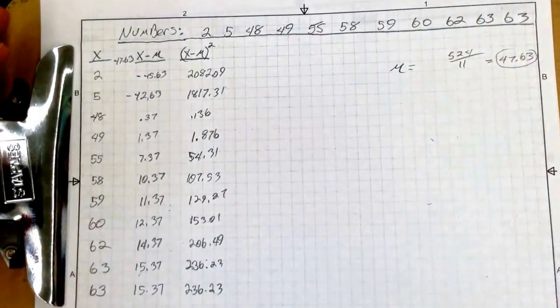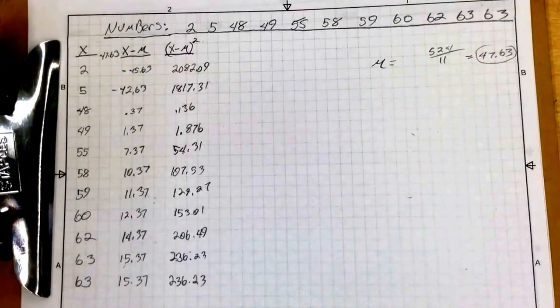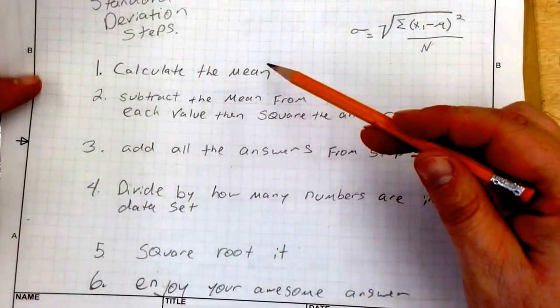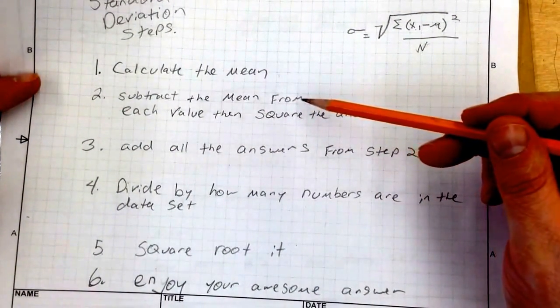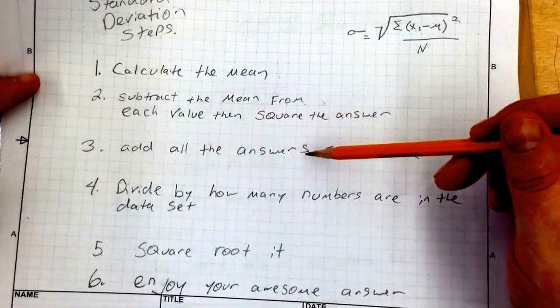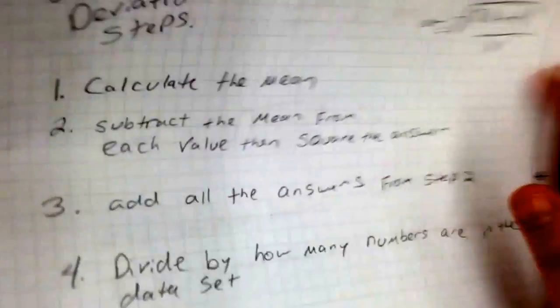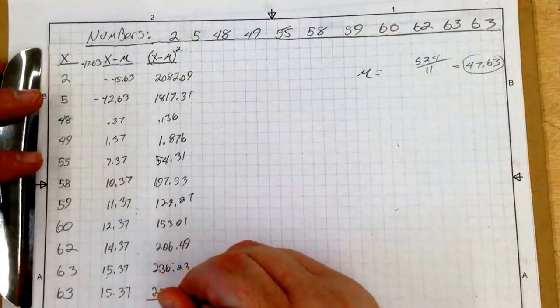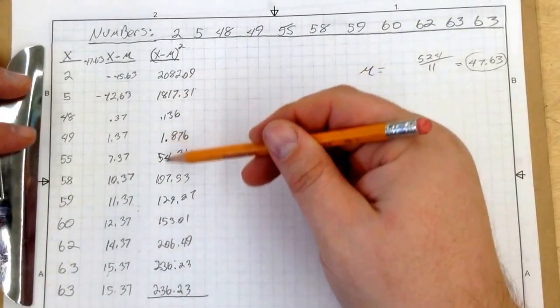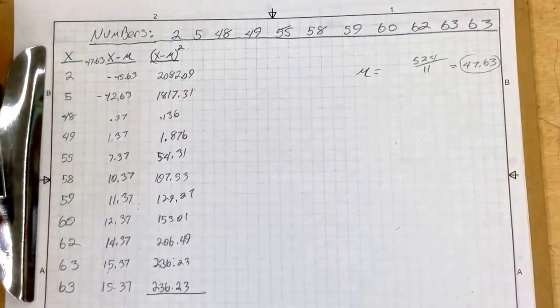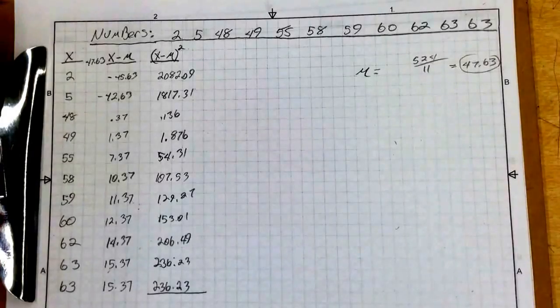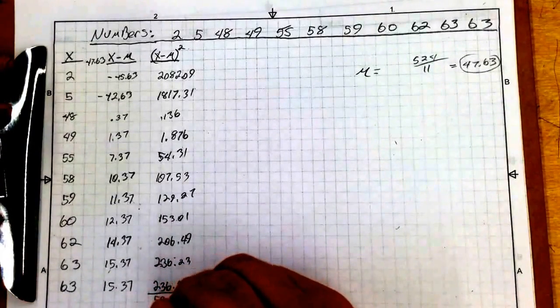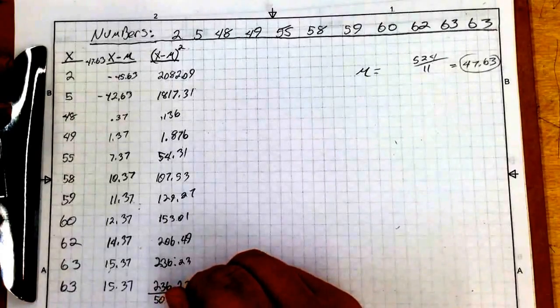Now if we remember back to our steps right here, we have to check this out. We calculated the mean. We subtracted the mean from each value and then squared the answer. We've got to add all these answers together. So right here, do yourself a little arithmetic problem. Add this column together. Now when I go through and I add this column together, I get 5024.482.